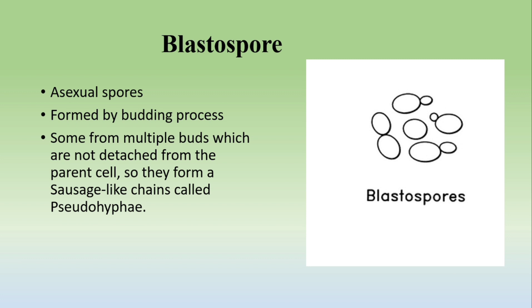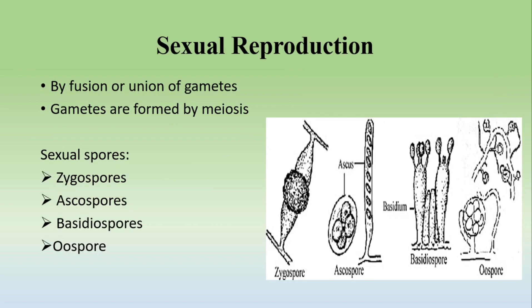Blastospores are also asexual spores that form simply by the budding process. Some form multiple buds that are not detached from the parent, and these are called blastospores. When a bud grows as an outgrowth but is not detached from the parent cell, it forms chain-like structures known as pseudohyphae.